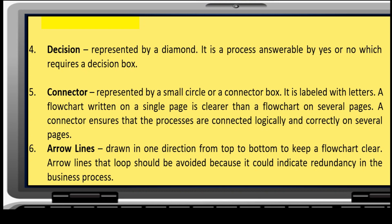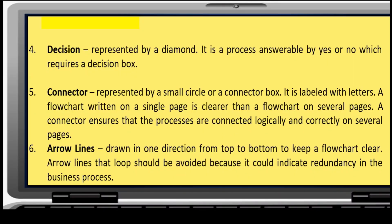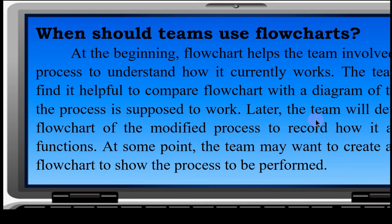Arrow lines: Drawn in one direction from top to bottom. It keeps the flowchart clear. Arrow lines that loop should be avoided before it could indicate redundancy in the business process. When should teams use flowcharts?